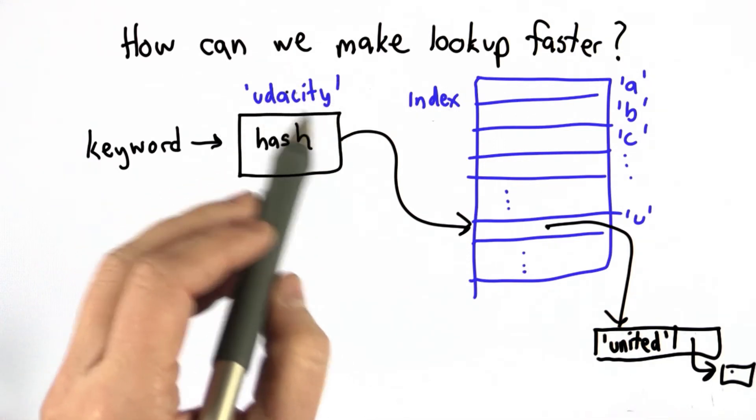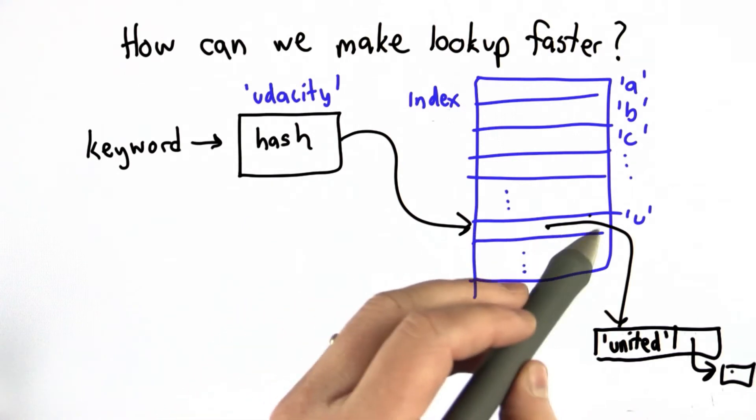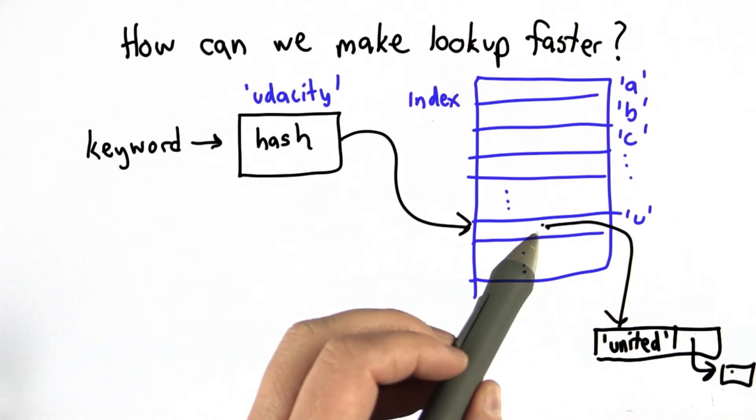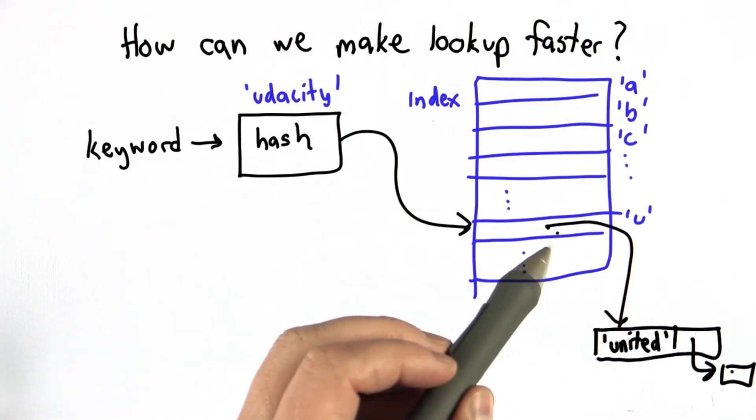So when we look up the word Udacity, we would look in the entry for U, and if the word that's there doesn't match, then we know Udacity isn't in the index. There are lots of problems with this. The first problem is, well, there might be more than one word that starts with U. So we can't just have one entry here. What we need to have is a list of entries.